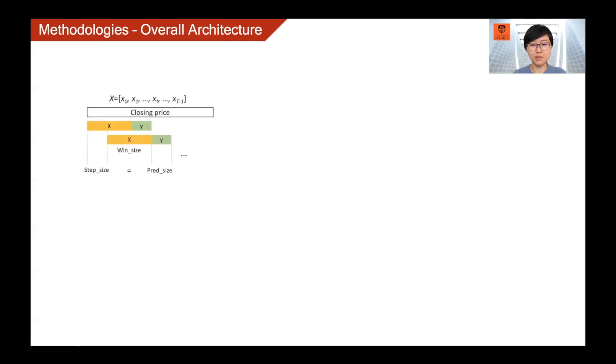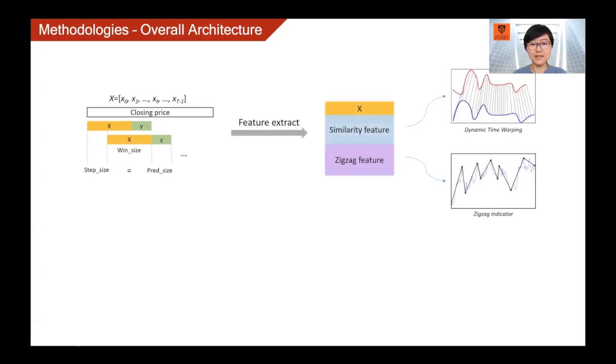As we can see, pre-processed time series data, the closing price of Forex, is taken into the model as an input. Then patterns underlined in this data will be extracted by two methods that will return two types of patterns, which are similarity features and zigzag peak value indicators.